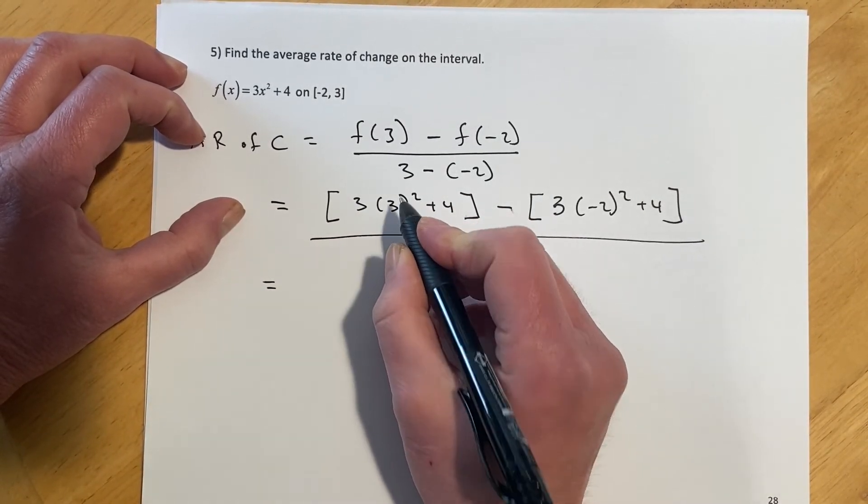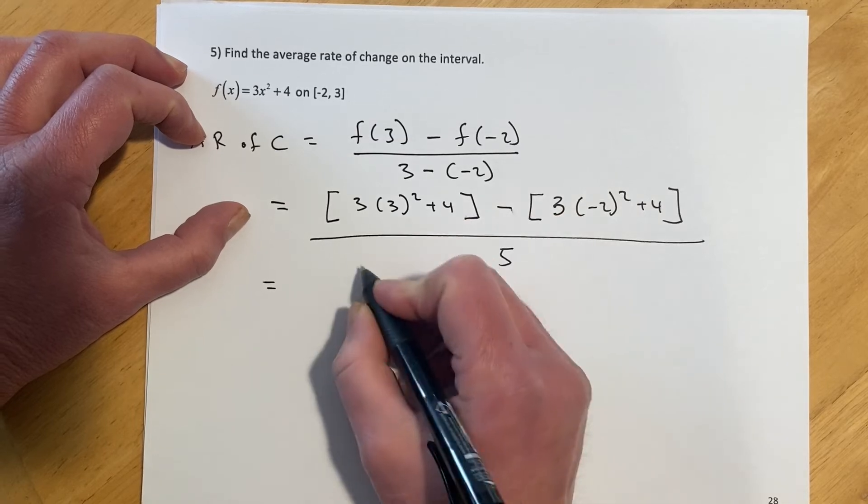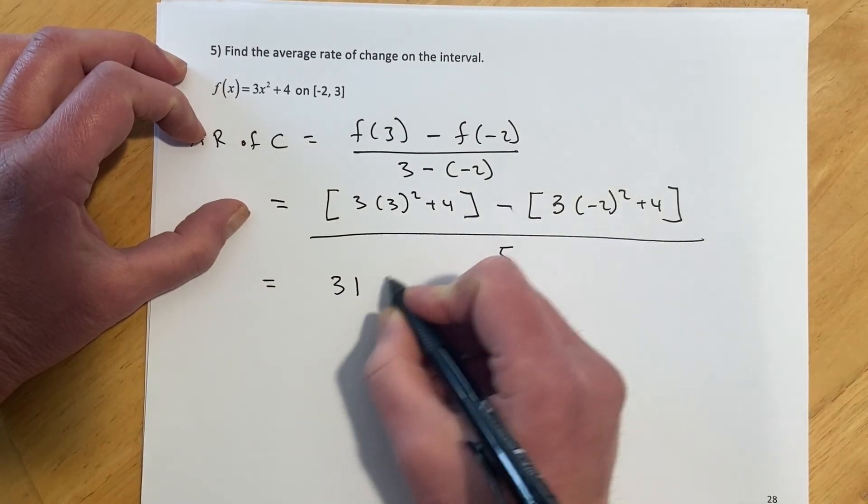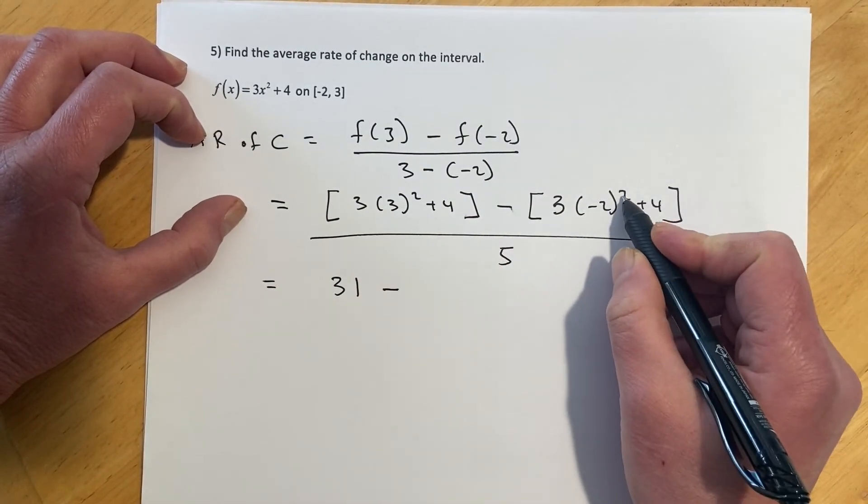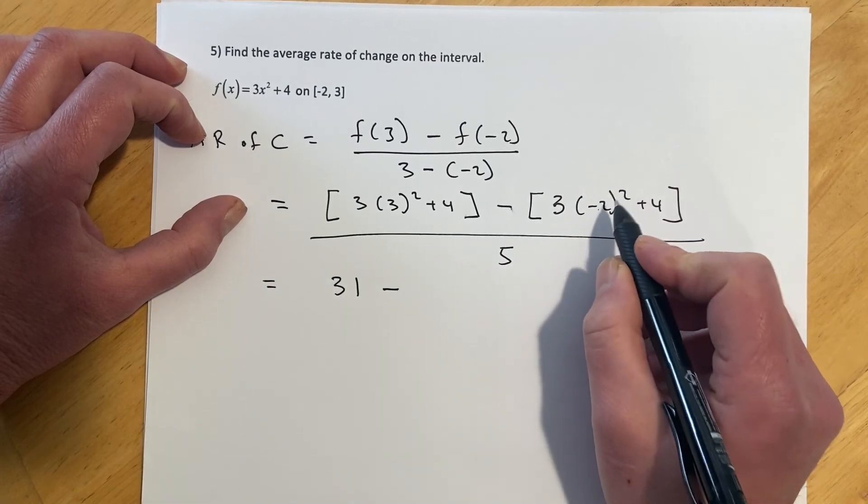So this number would be 27 plus 4 makes 31, and that minus sign right there, negative 2 quantity squared, that's a positive 4, times 3 is 12,